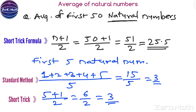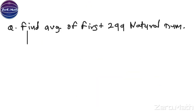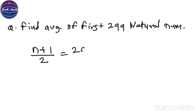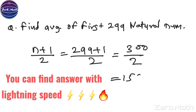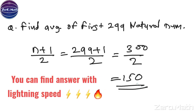The short trick saves your time. Find the average of the first 299 natural numbers. Using the trick: (299 + 1) / 2 = 300 / 2 = 150. Very, very easy, is it not?